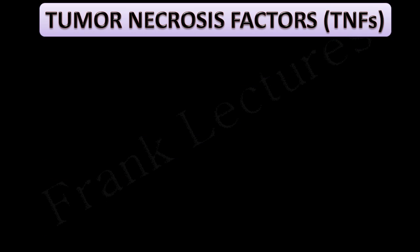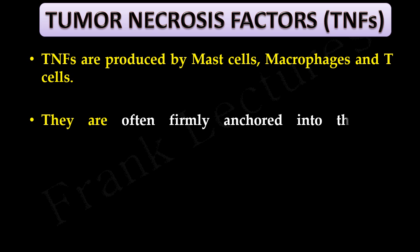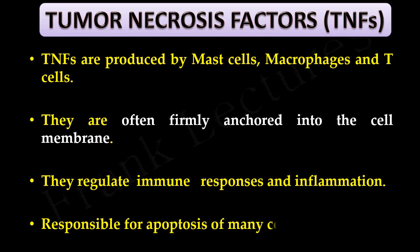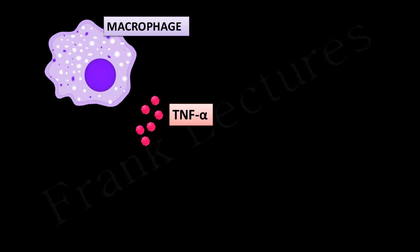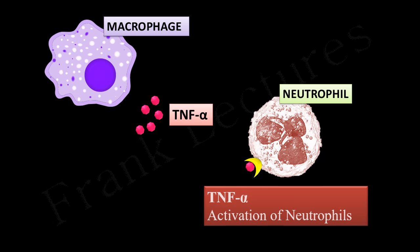Tumor necrosis factors, abbreviated as TNF, are produced by mast cells, macrophages, and T cells. They are often firmly anchored into the cell membrane, making TNFs membrane-bound cytokines. They regulate immune responses and inflammation, and are responsible for apoptosis of many cell types. For example, macrophages release TNF-alpha, which binds to cytokine receptors on neutrophils and results in their activation.